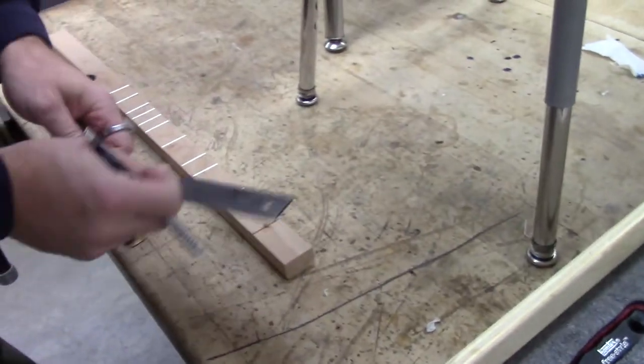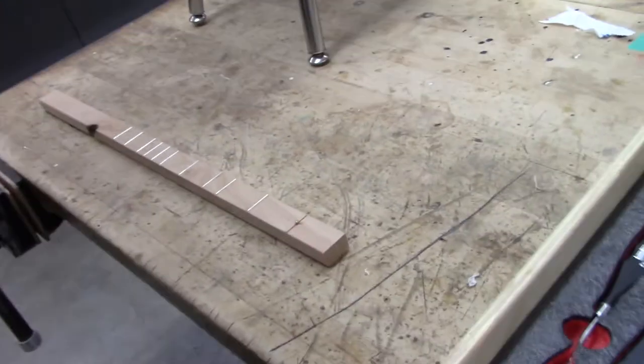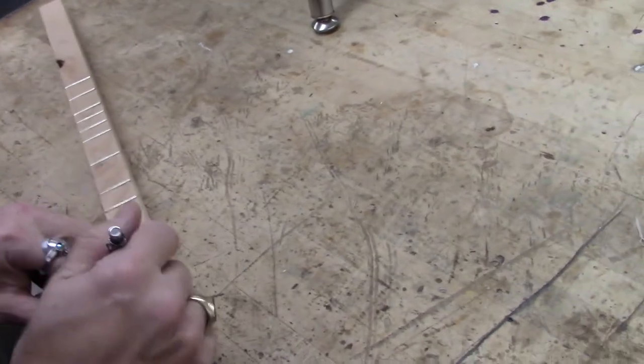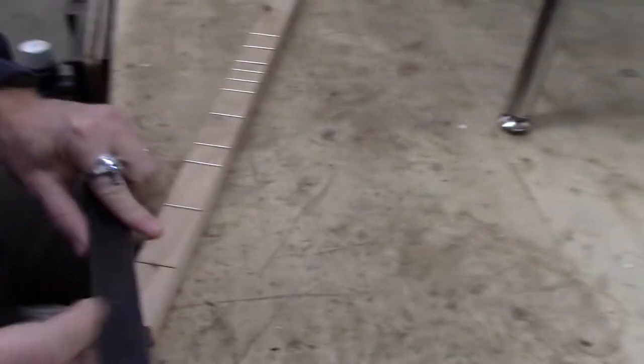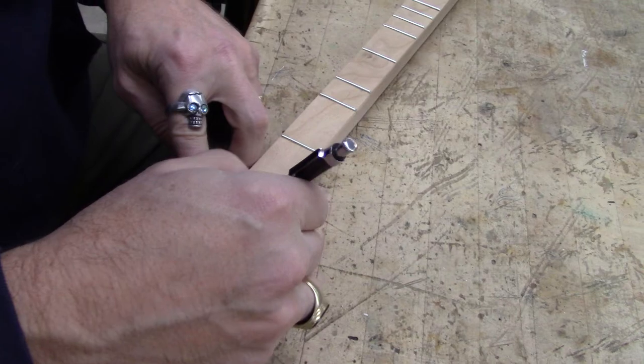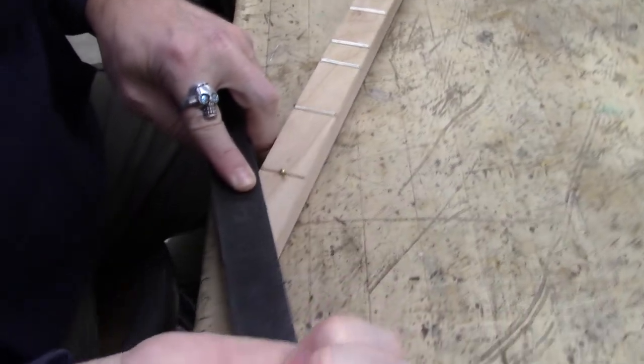You guys will need a pencil, and we're just going to find the center of our headstock. So we're going to go from that laser engraved line, we're just going to go corner to corner to find our center. And then a small X.